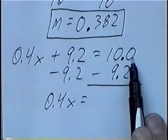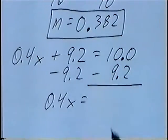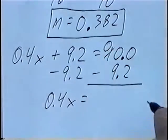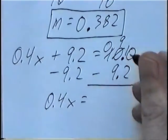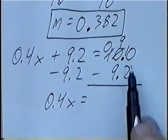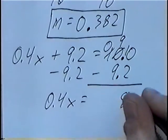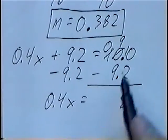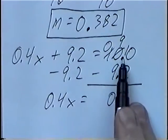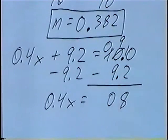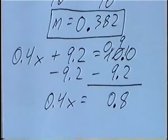Subtracting decimals: 0 minus 2, we can't subtract. We can't borrow from the 0, but we can borrow from the 1, which makes the 0 a 9 and the first 0 a 10. So 10 minus 2 would be 8, and 9 minus 9 would be 0. The decimal point again comes straight down, so we'll have 0.8.